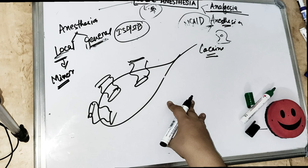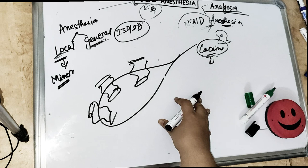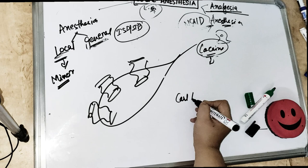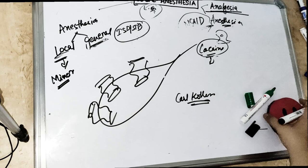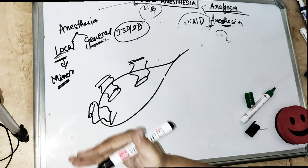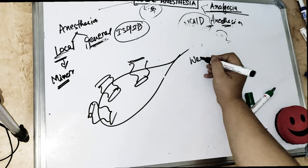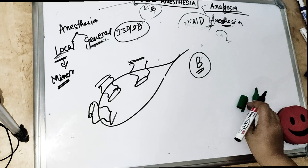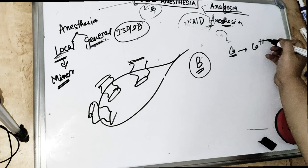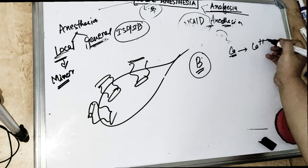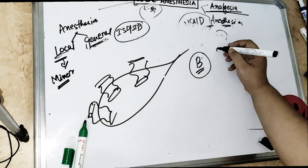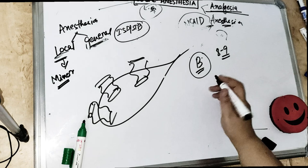Coming back to how LA blocks the sodium channels: local anesthesia is basically a weak base — unionized form, meaning there are no ions on it. It is a weak base under pH 8 to 9. Now if you remember, the cell membrane is composed of a phospholipid bilayer — two layers of lipid, basically fats. If you try to dissolve fat in water, you cannot. So the cell membrane is made up of fats, and any fat-soluble thing is going to get inside very easily. Because it is in unionized form, it can easily penetrate the cell membrane at a faster rate.